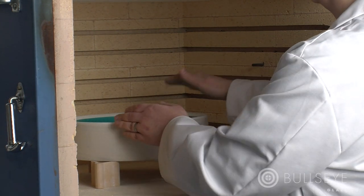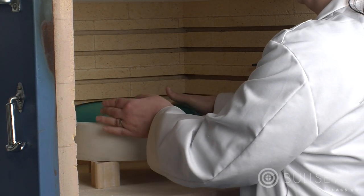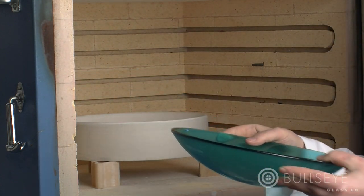Ideally, slumping molds should allow the glass to freely expand and, more importantly, contract without resistance.